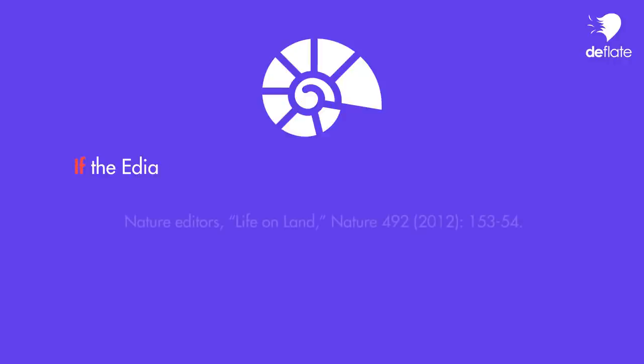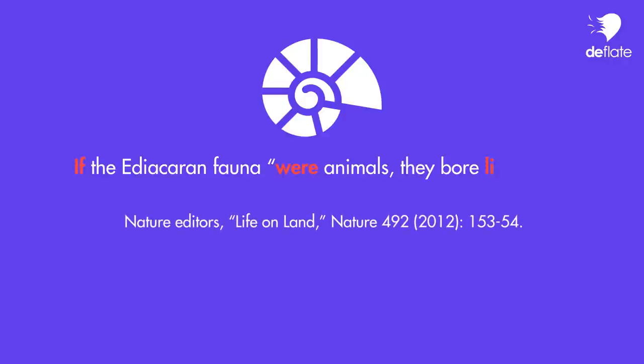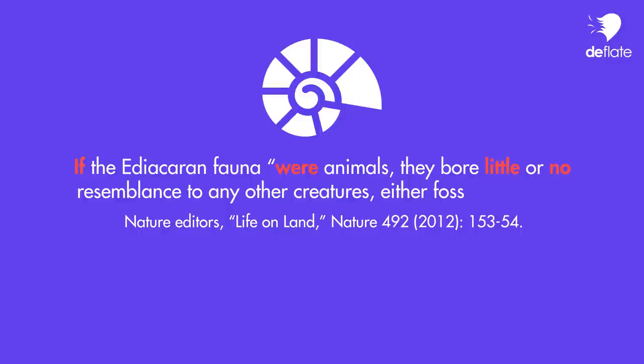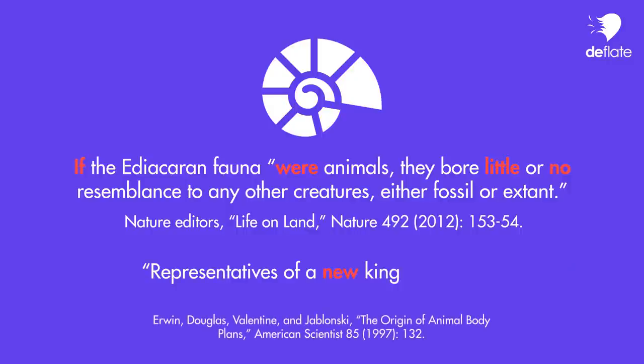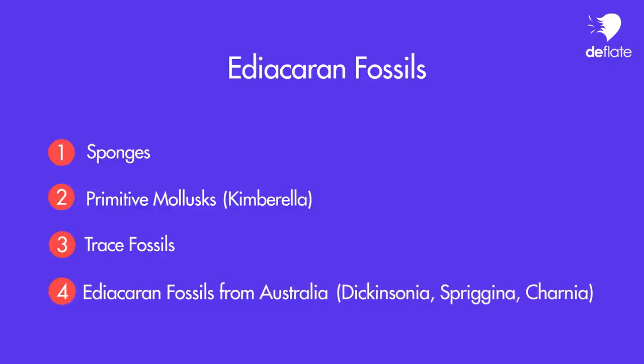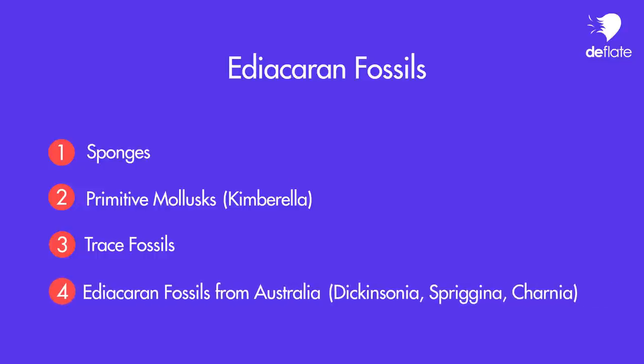That's why the magazine Nature noted that if the Ediacaran fauna were animals, they bore little or no resemblance to any other creatures, either fossil or extant. Others have called these organisms representatives of a new kingdom entirely separate from the animals. Therefore, the most notable organisms of the Ediacaran, from the Australian hills, are off the table as possible precursors of the Cambrian animals.